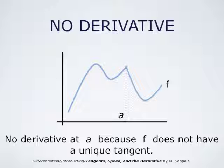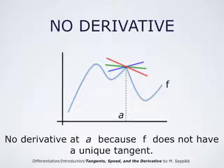Situations where functions have no derivative are points where the functions do not have a unique tangent line. So here the point a is one such example. The graph of the function f at the point (a, f(a)) does not have a unique tangent line because we may draw several different lines which are all tangents to the graph of f at that particular point. So in this case we have no derivative at the point x equals a, but this function f does have derivatives at other points.